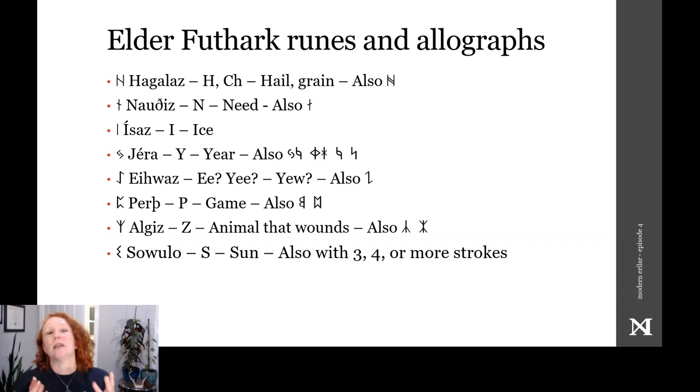Sowolo is the S sound, and it means sun. It shows up in a whole bunch of different forms, all formed from a series of zigzags, usually with three or four, but sometimes with extra strokes. If it looks like zigzags, that's probably a Sowolo, so I won't even try to show some allographs here, but it's usually three or four strokes.